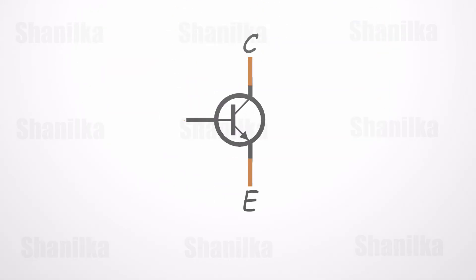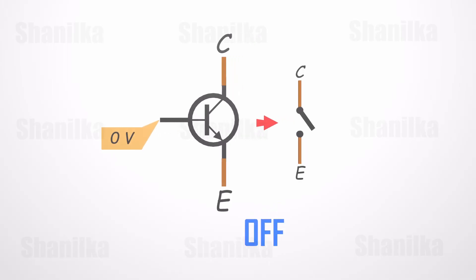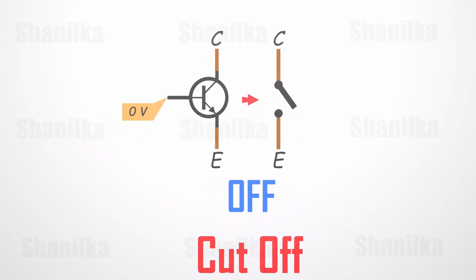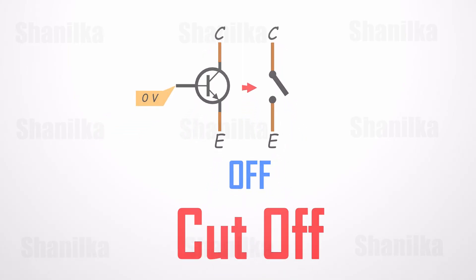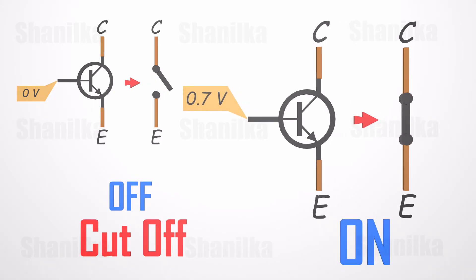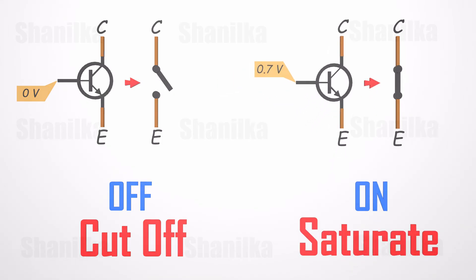When an NPN transistor is used as a switch, if we set the base to 0 volts, it acts as an off switch — we call this cutoff mode. If we set the base to 0.7 volts, then it acts as an on switch — we call this saturation mode.